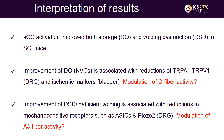sGC activation improved both storage and voiding dysfunction in SCI mice. Improvement of detrusor overactivity is associated with reductions of TRPA1, TRPV1 in DRG and ischemic markers — possibly through modulation of C-fiber activity.